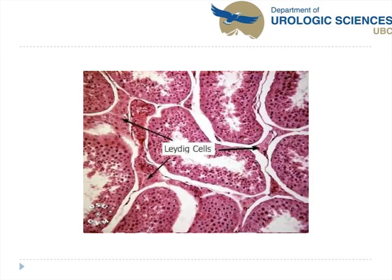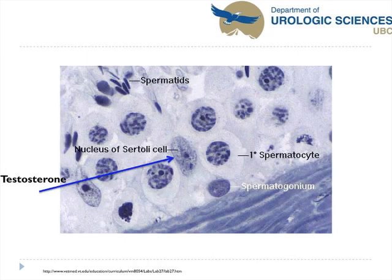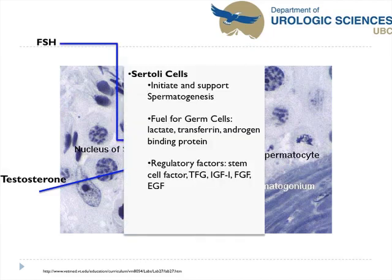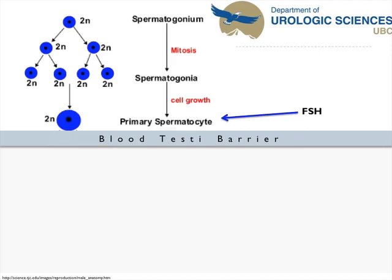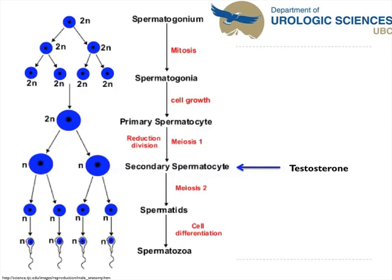Looking at the basics of physiology: LH stimulates the Leydig cells to produce testosterone, which then acts on the Sertoli cells in combination with FSH. This initiates and supports spermatogenesis, with Sertoli cells nourishing the germ cells. Externally, you start with a spermatogonium — the progenitor cell — which undergoes mitosis and cell growth to a primary spermatocyte. FSH facilitates this point forward. It crosses the blood-testes barrier during meiosis to a secondary spermatocyte, testosterone acts, and finally it differentiates to spermatids then spermatozoa.